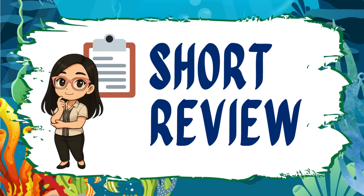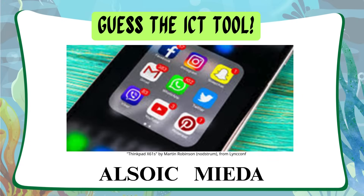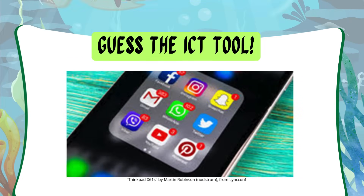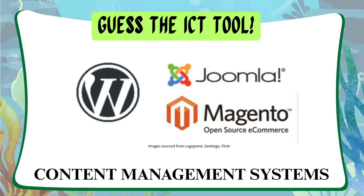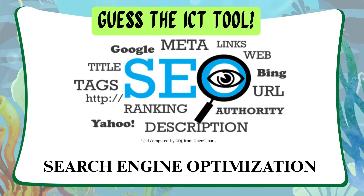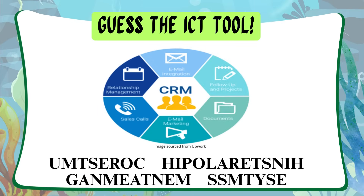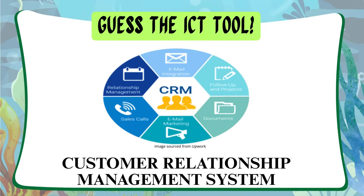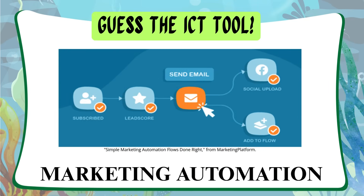Short Review: Guess the ICT tool. Look at the picture and solve the jumbled letters. The answers include Social Media and Content Management Systems.